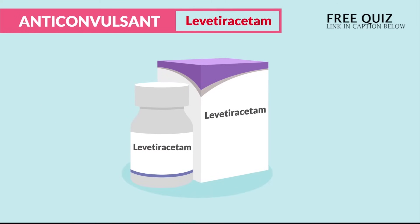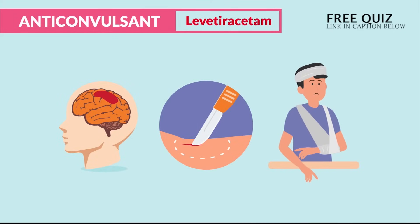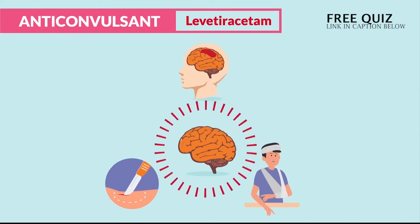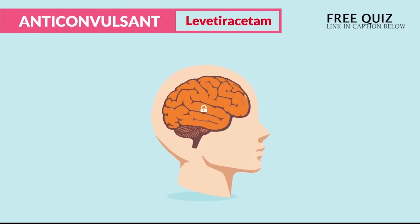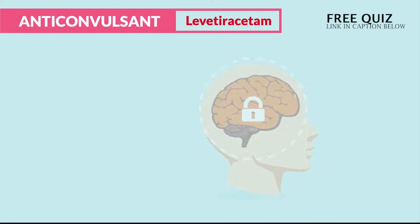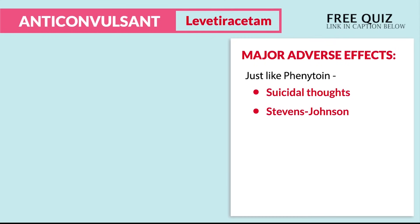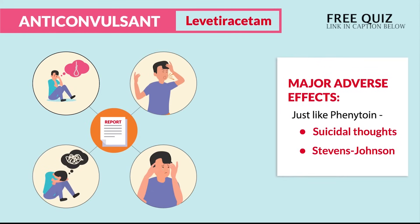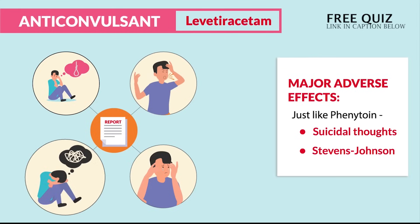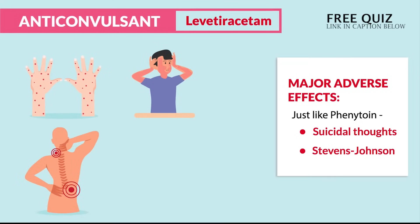Our second drug for anticonvulsants is levetiracetam, given to prevent and treat seizures for those at high risk, like those following a brain tumor, surgery, or trauma to the brain, which can increase intracranial pressure. This is often preferred over phenytoin due to minimal drug-to-drug interactions. Like phenytoin, it's a CNS depressant, so we get a low and slow body with drowsiness and fatigue. The major adverse effects, just like phenytoin, are the double S's: suicidal thoughts and Stevens-Johnson syndrome. We report key words like new anxiety, new agitation, depression, or mood changes. For Stevens-Johnson's, report rash, blistering, muscle and joint pain, and conjunctivitis.